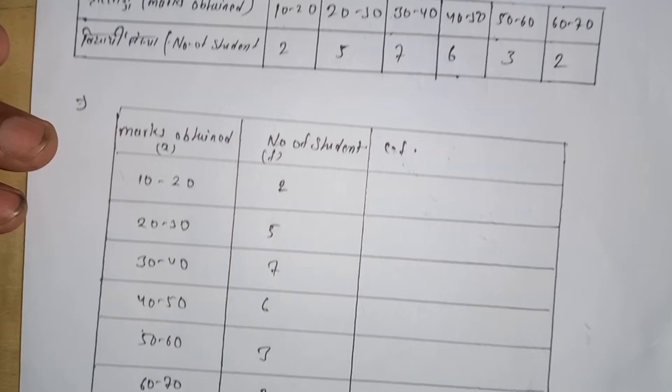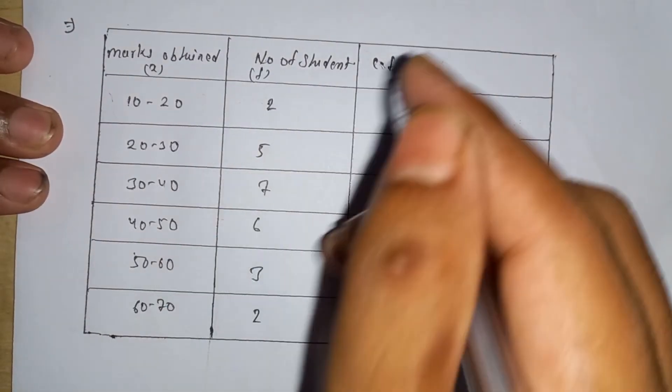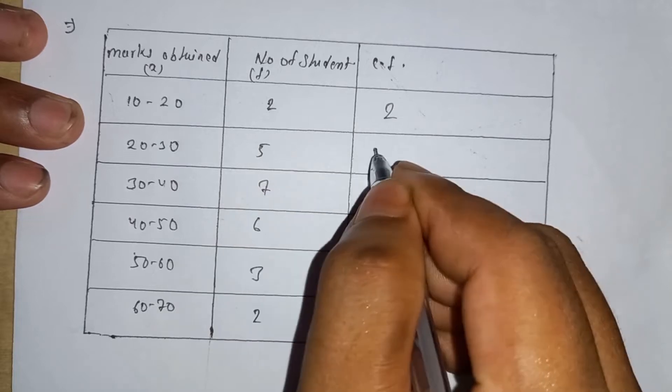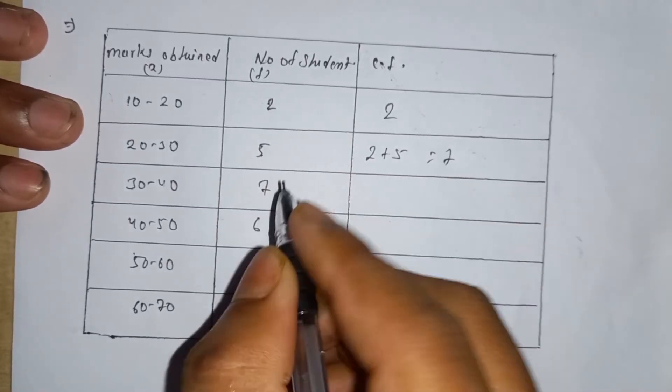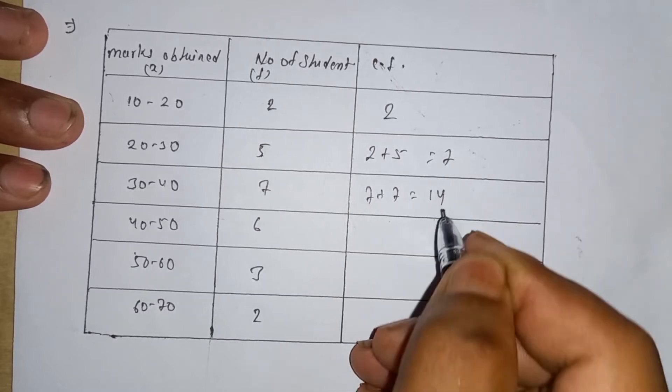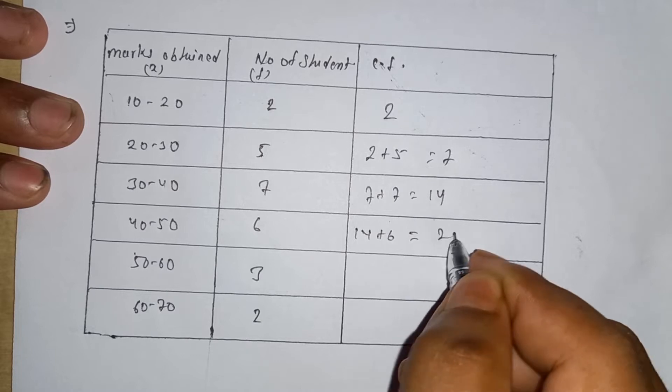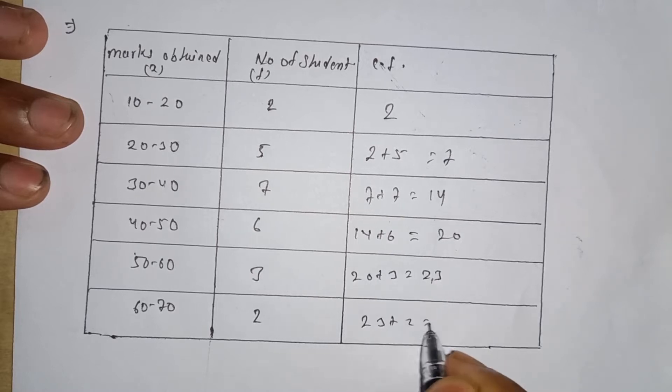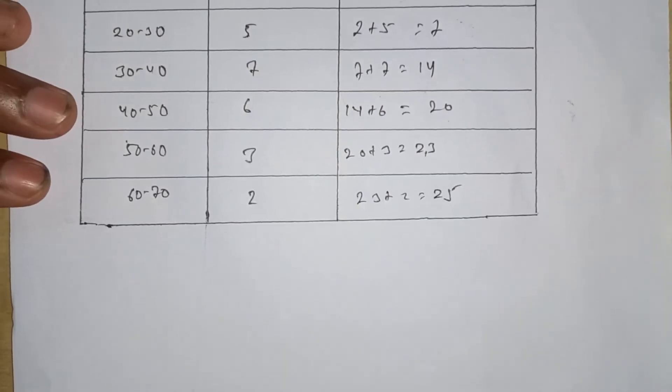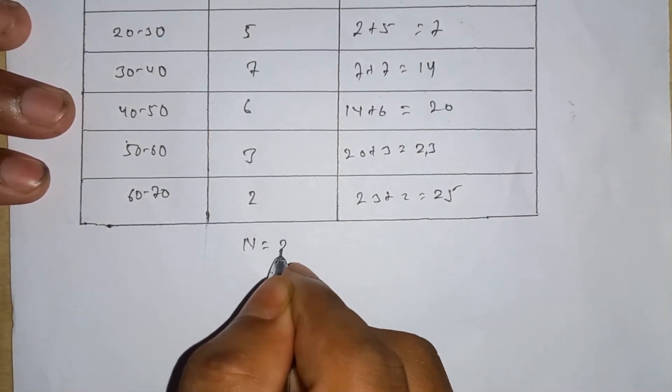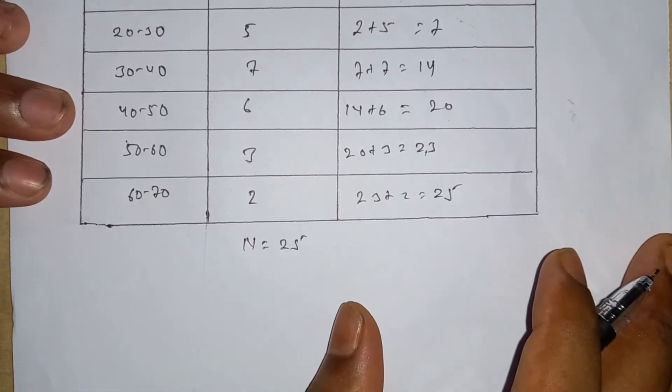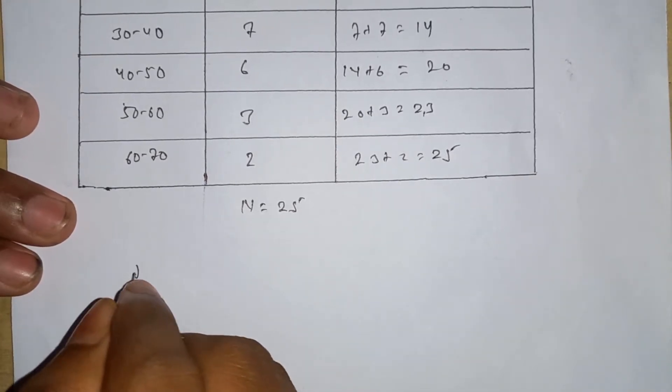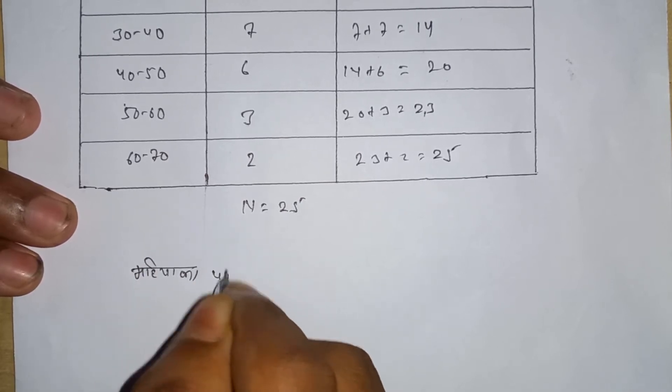Now we calculate cumulative frequency. 2 plus 5 equals 7, 7 plus 7 equals 14, 14 plus 6 equals 20, 20 plus 3 equals 23, 23 plus 2 equals 25. So N equals 25.